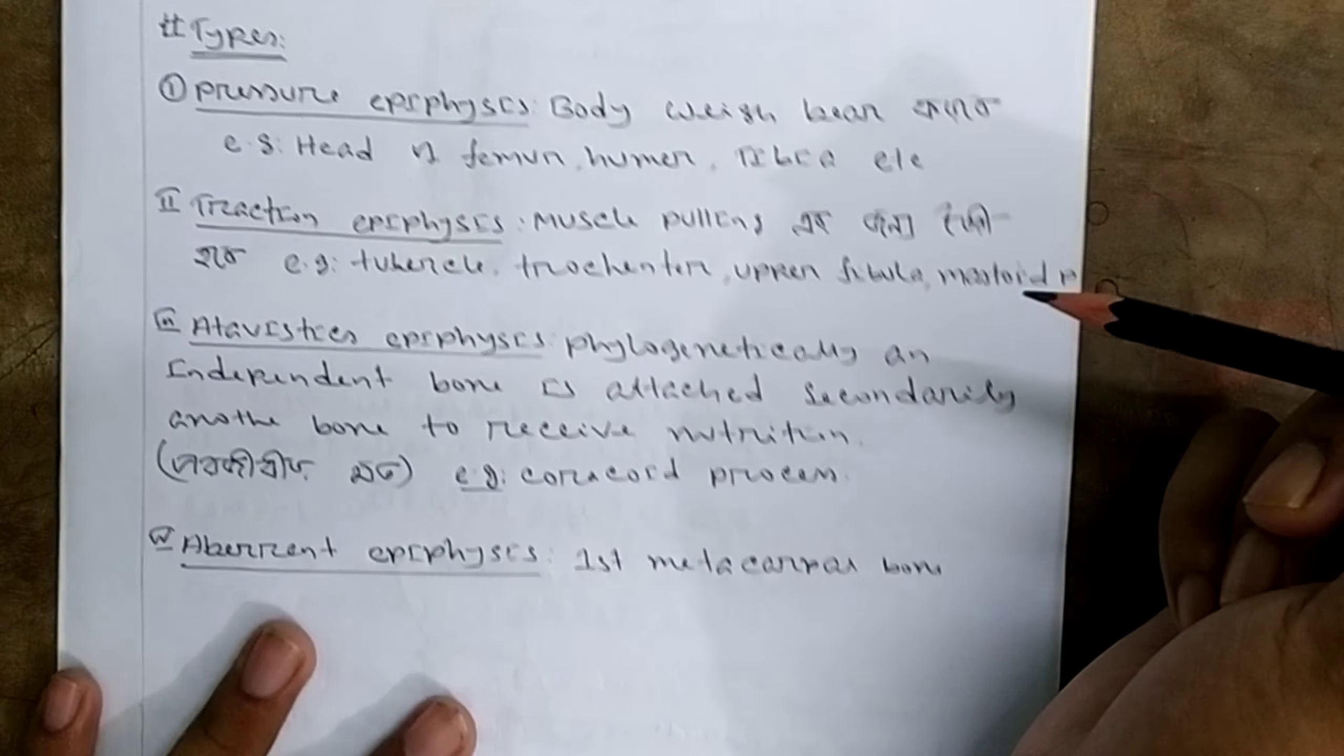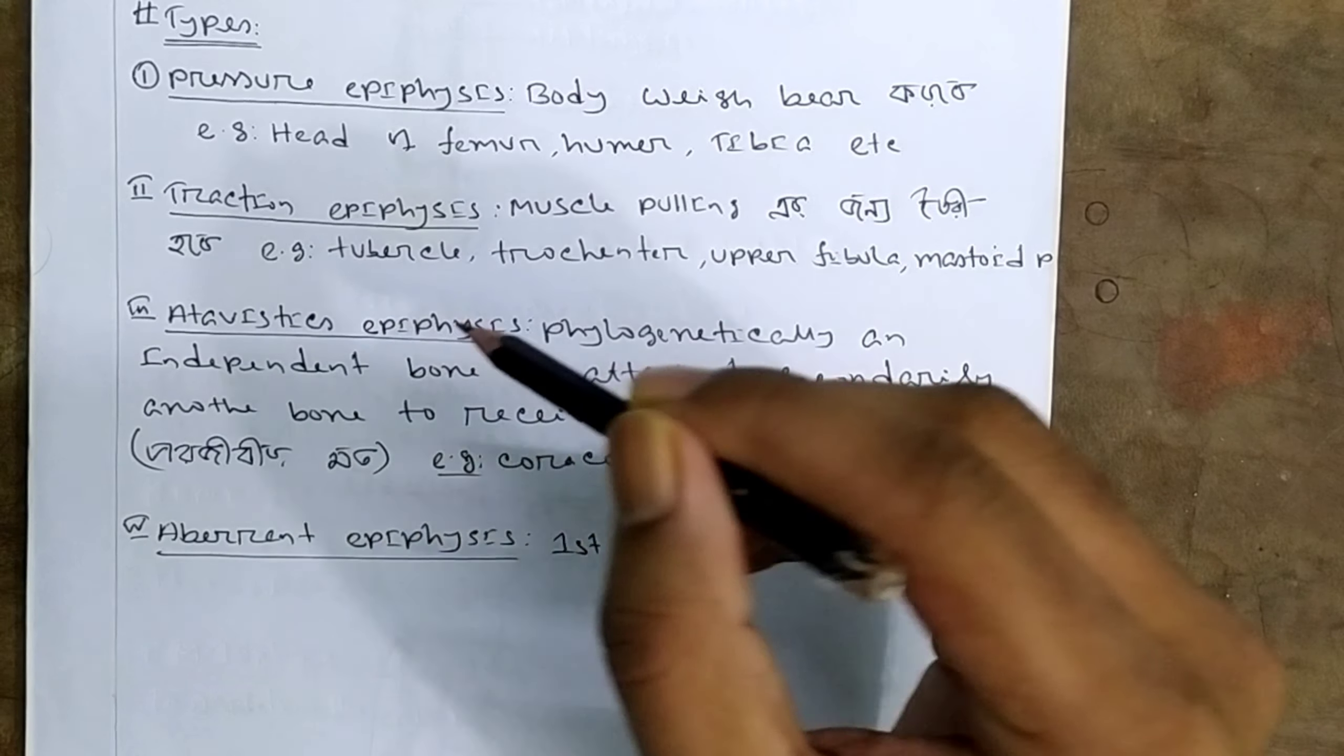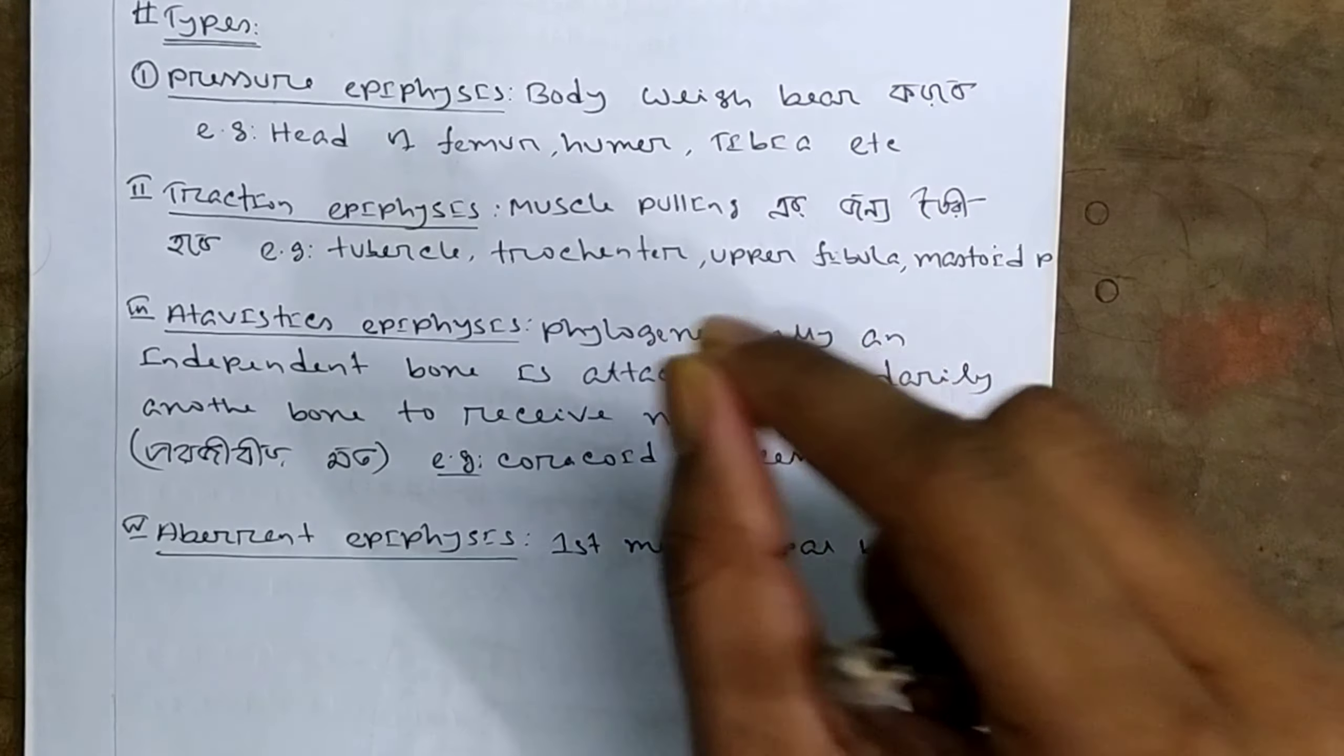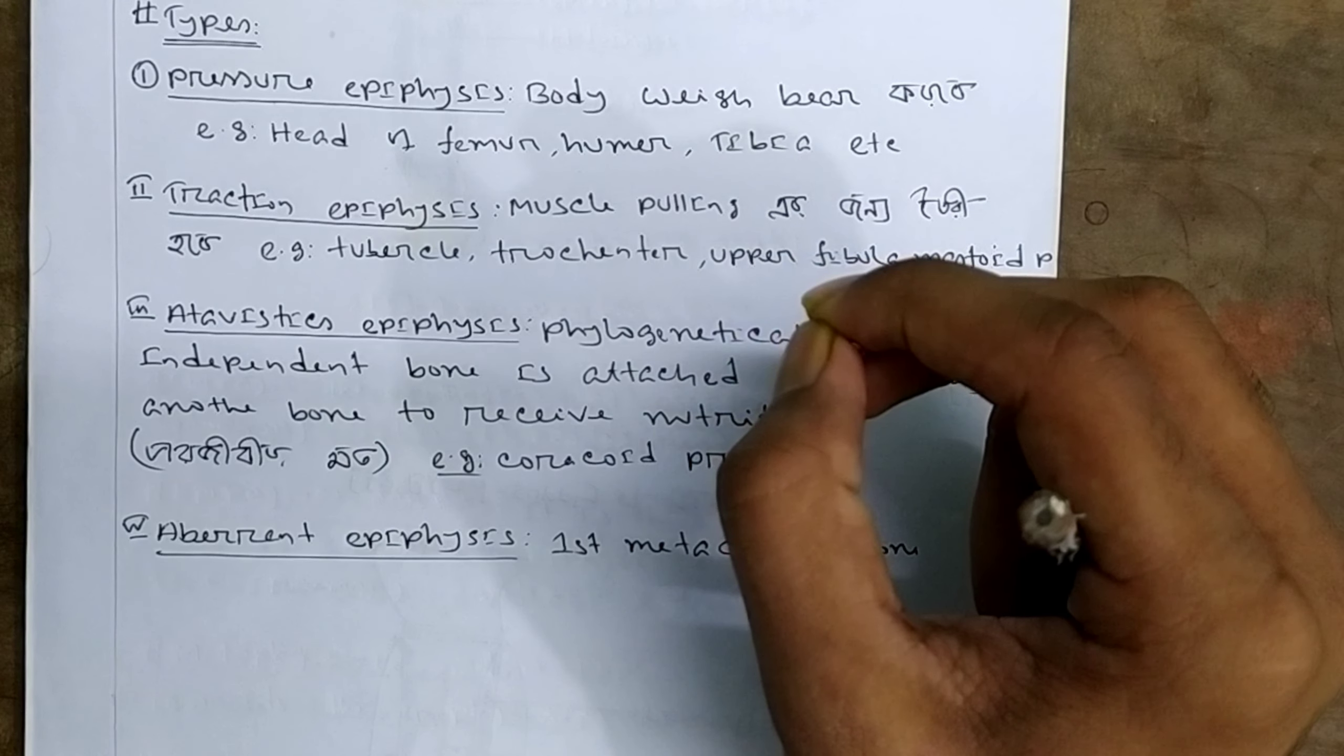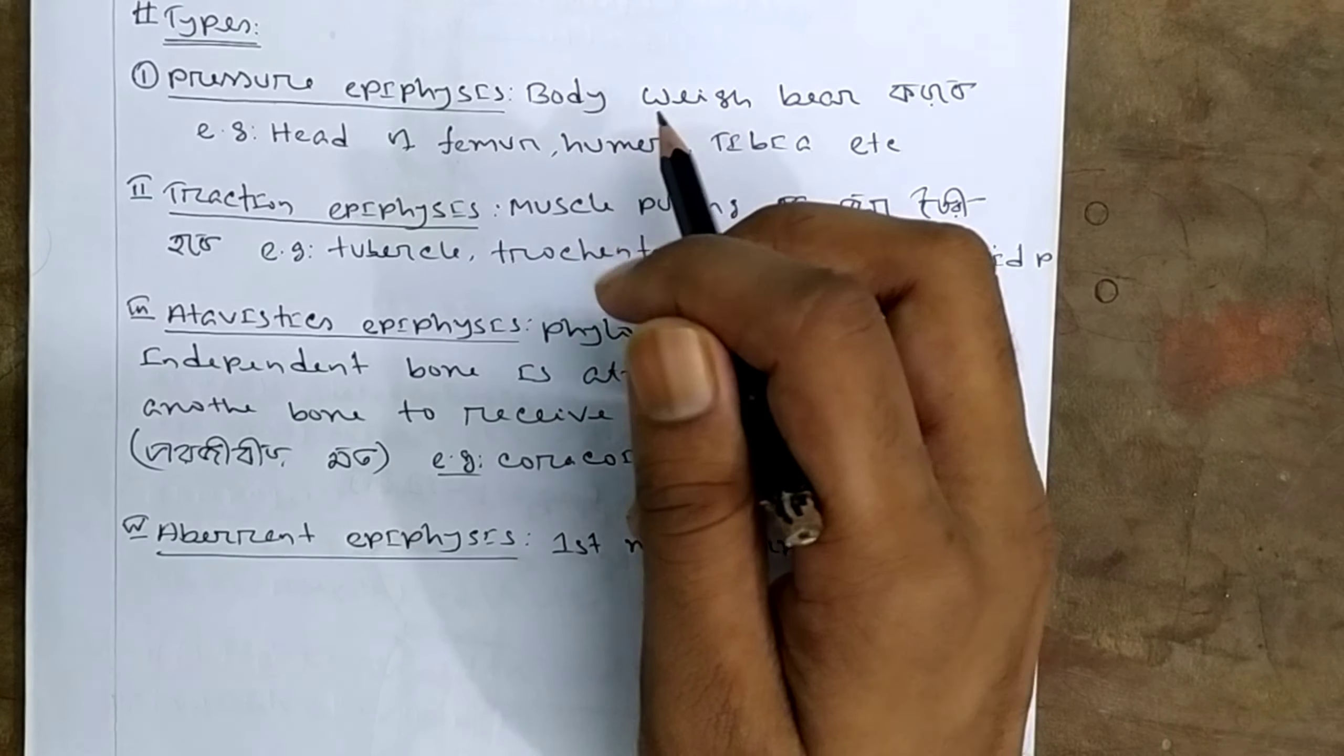Traction epiphysis is for muscle pulling. The muscle pulls on these areas. This is where muscle attachment occurs. This is the traction epiphysis.